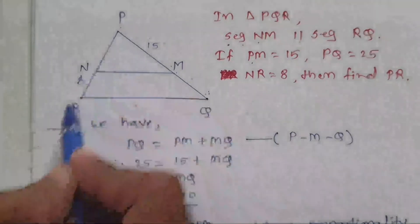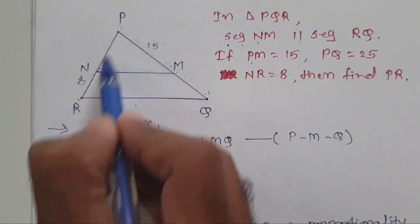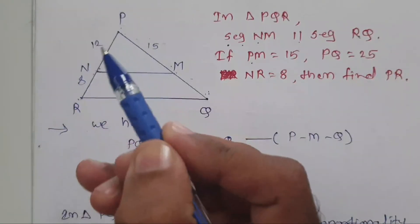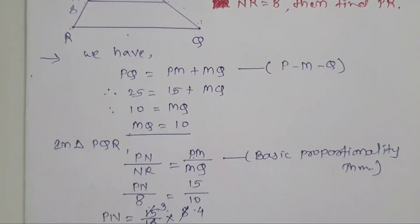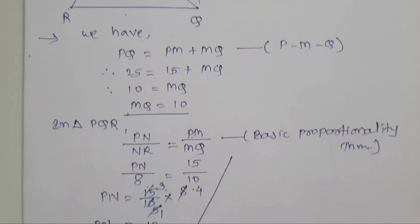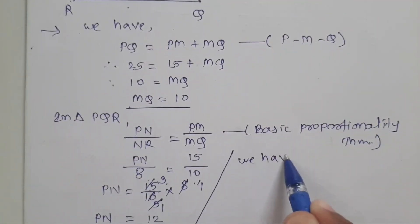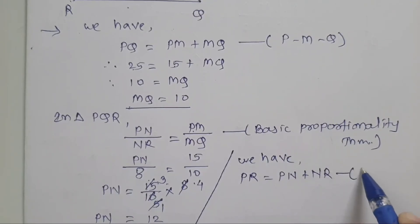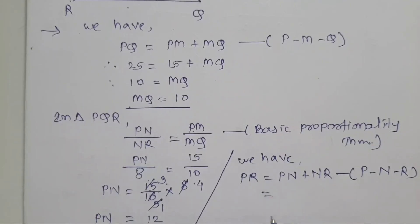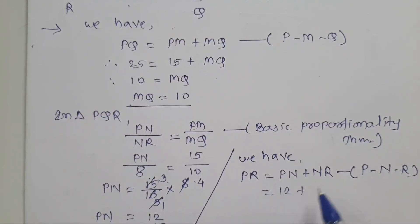Now we have to find the length of PR. Since P, N, R are collinear points, PR equals PN plus NR. We just found PN to be 12, and NR is already given as 8. So PR equals 12 plus 8, which is 20. The length of segment PR is 20.